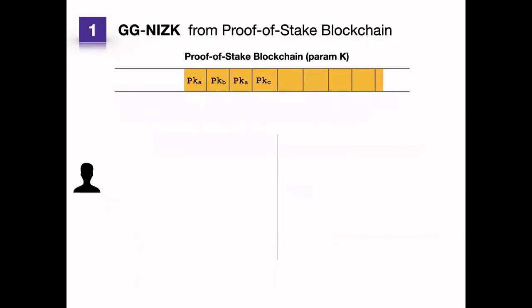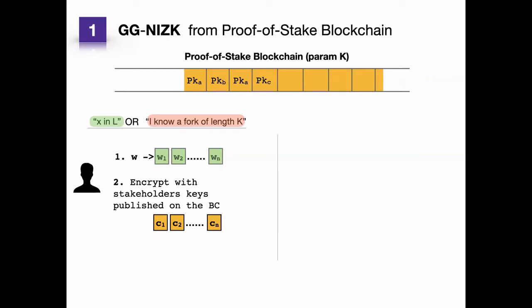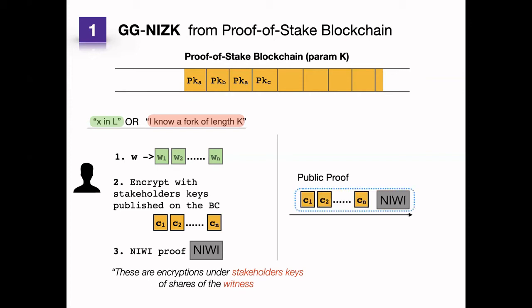More in detail: we have our blockchain with a bunch of public keys of stakeholders, a parameter K carefully used in the analysis of Goyal and Goyal, and our prover. At a high level, the non-interactive WI will prove X is in L, or I know a fork of length K. The honest prover, which has a witness for X in L, will secret-share this witness and encrypt the shares using the public keys. She will compute a bunch of encryptions, and using non-interactive WI, prove that the encrypted shares compose a witness for X in L. Then she sends to the verifier this bunch of encryptions and the non-interactive WI.